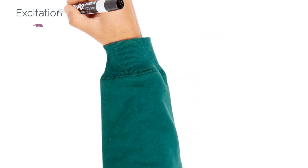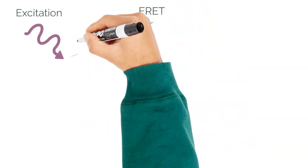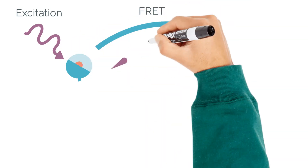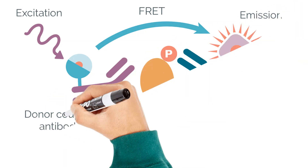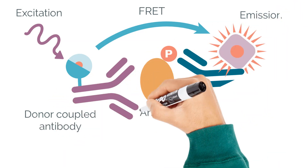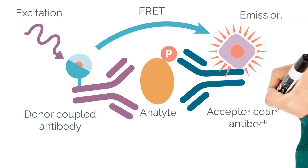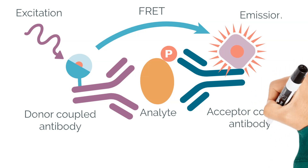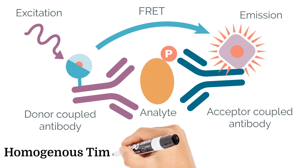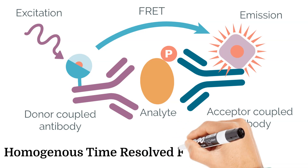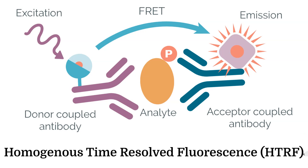Homogeneous time-resolved fluorescence (HTRF) uses two specific fluorescent dyes coupled with donor and acceptor anti-insulin antibodies that emit specific fluorescence when brought close to each other. In the presence of insulin, both antibodies bind to insulin, bringing the dyes into proximity. When excited by light, the donor dye emits a fluorescent signal transferred to the acceptor dye, producing a specific acceptor fluorescent signal proportional to insulin concentration.